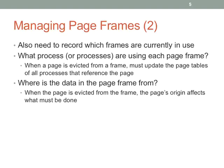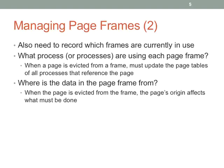The frame table should record what process or processes are using a frame, so that when evicting it, you can update all relevant page tables. Where the data came from is also very important — it tells you what to do when you evict the page. You may also want to know whether a page is pinned, meaning it cannot be removed from memory. Kernel pages are a great example: a non-paged kernel pins all its own pages so they can't be paged out.